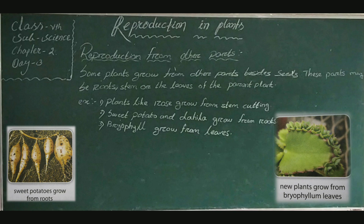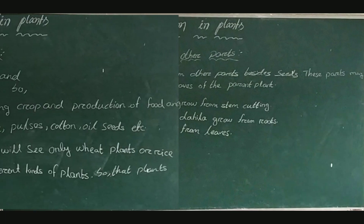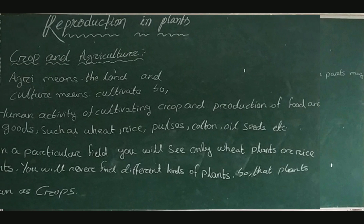Similarly, begonia and bryophyllum grow from leaves. A common example of plants that grow from stem is potato. We already know that the potato is an underground stem that stores food. Look at the pictures: sweet potatoes grow from roots and new plants grow from bryophyllum leaves.